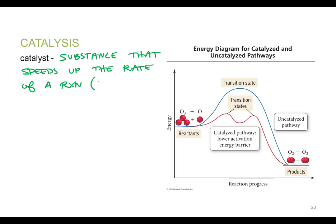You'll often see it written 'without being consumed.' Because reactants can speed up a reaction — if you throw more reactants in there and it's first or second order, that's going to increase the rate. But that's not really a catalyst. A catalyst is something not involved in the reaction that somehow increases the rate, and since it's not involved in the reaction, it's not going to be consumed.